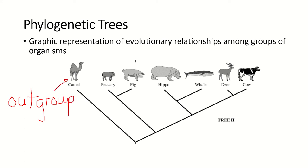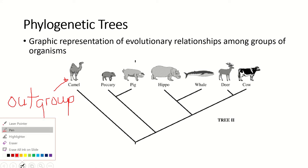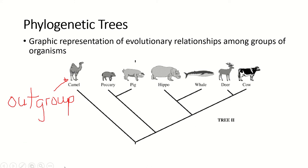The outgroup means that it is closely related to the others, but does not have all of the characteristics of the other things on the tree. These areas where two groups meet are called nodes, and nodes represent a common ancestor.